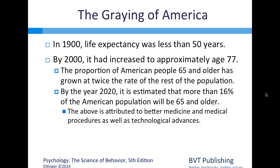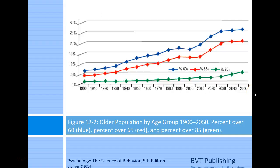Regarding the graying of America: in 1900, life expectancy was less than 50 years; by 2000 it had increased to approximately 77—a significant jump. The proportion of Americans aged 65 and older has grown at twice the rate of the rest of the population. By 2020, more than 16% of the American population is estimated to be 65 or older, attributed to better medicine and technological advances. A graph showing older population by age group from 1900 to 2050 tracks percent over 60 (blue), over 65 (red), and over 85 (green), all showing a steady incline.